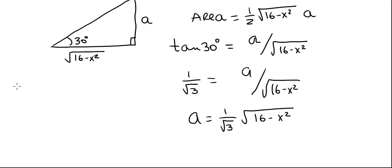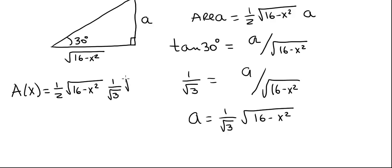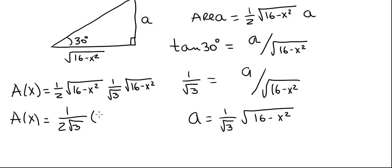Now we can express A(x), the area of the cross-sectional triangle, as a function of x. It's one half times the square root of 16 minus x squared times A, which is 1 over square root of 3 times the square root of 16 minus x squared. So A(x) equals 1 divided by 2 square root of 3, and the two square roots multiply to give 16 minus x squared.